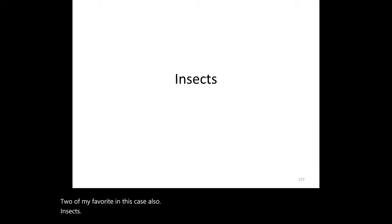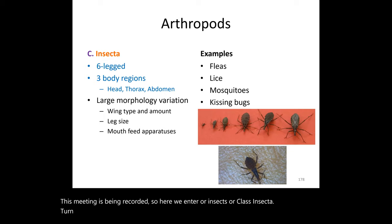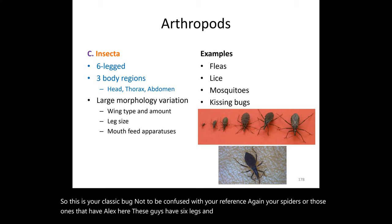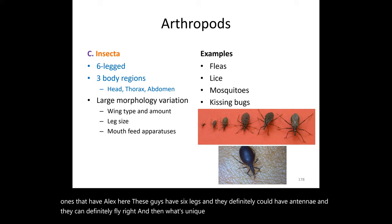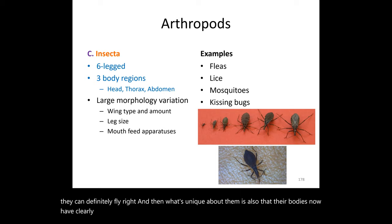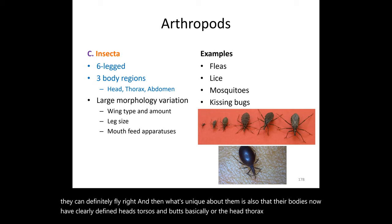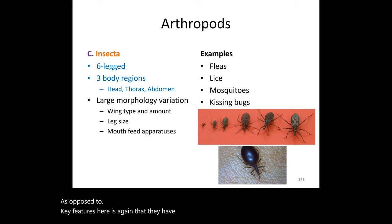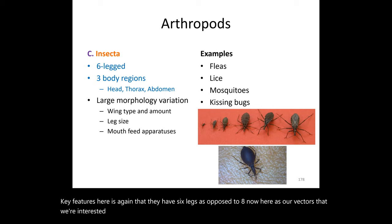Now we enter Class Insecta. Not to be confused with arachnids — the eight-legged spiders — insects have six legs and can have antennae and wings. Their bodies have clearly defined heads, thoraxes, and abdomens. The key distinguishing feature remains that six-legged count as opposed to eight.